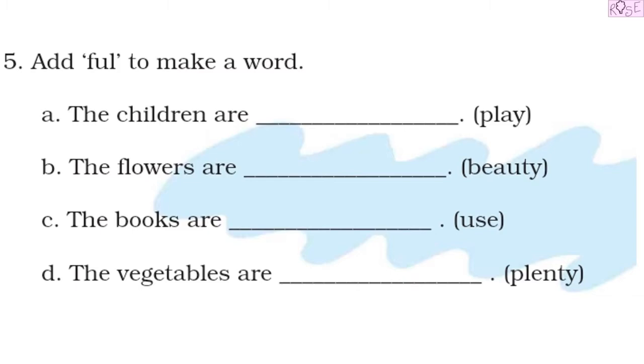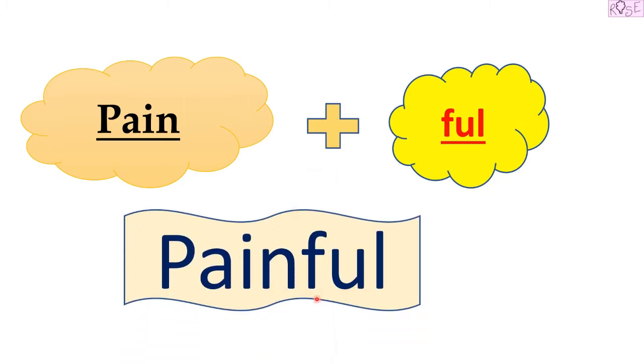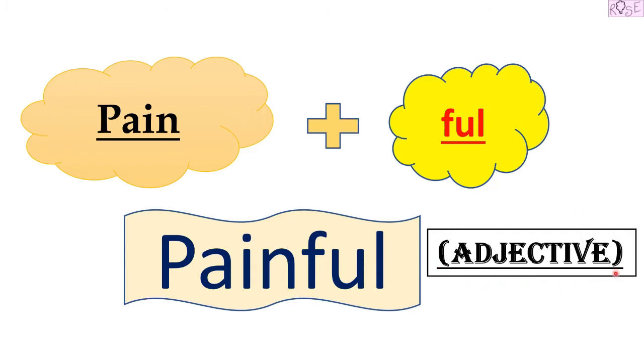Let us look at an example. I have the word 'pain'. We all know that pain is a noun. Now we add F-U-L to it at the end of the word, making a new word: painful. Painful is an adjective, which means full of pain. For example, in the sentence 'The doctor is examining the painful cut on her leg,' painful is describing the word cut.